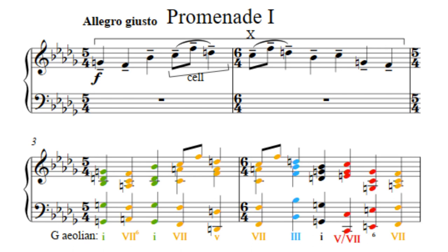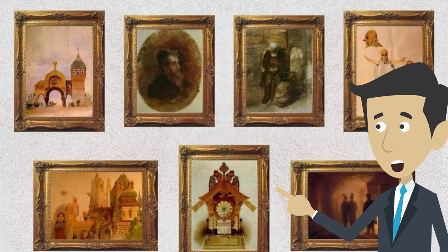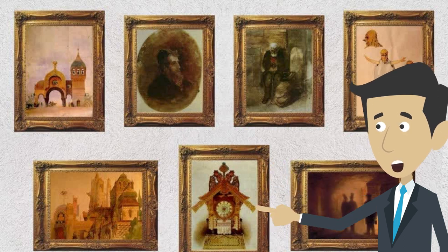The piece has a simple and strong rhythm in asymmetrical beats. We really don't know how Mussorgsky felt, but his five promenades depict a strong encounter between the viewer and the image.